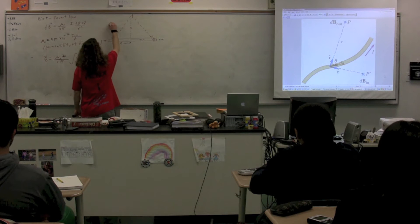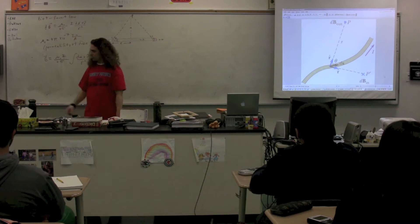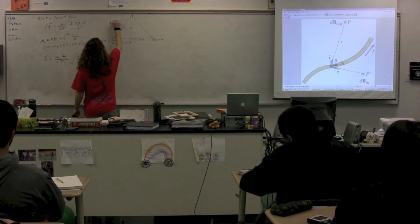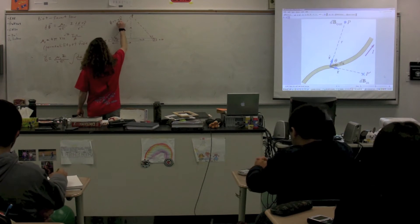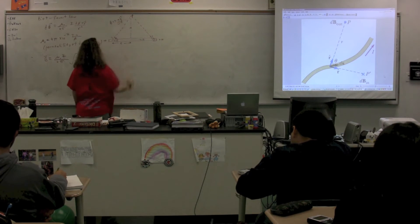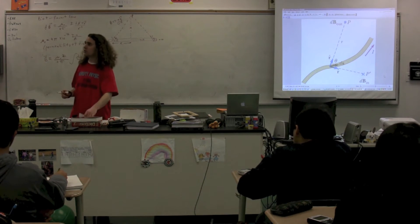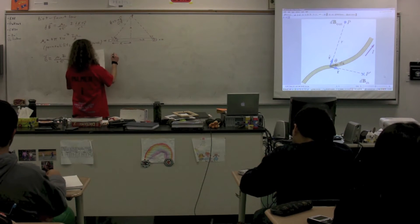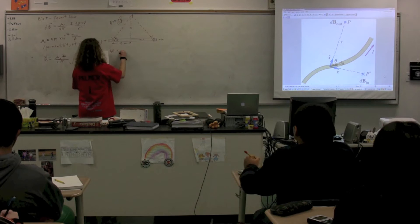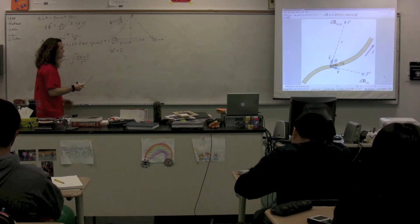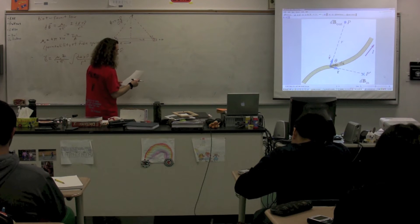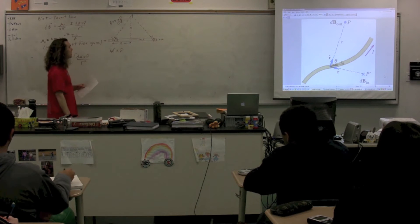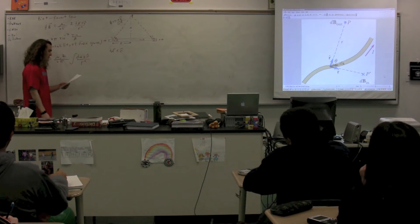You point your fingers in the direction of dS, curl them in the direction of R, and your thumb points in the direction of the magnetic field — out of the page at point P on this side of the wire. At point P prime on the other side, the magnetic field is into the page. We know the magnetic field is going to be in the positive K direction, or out of the board.